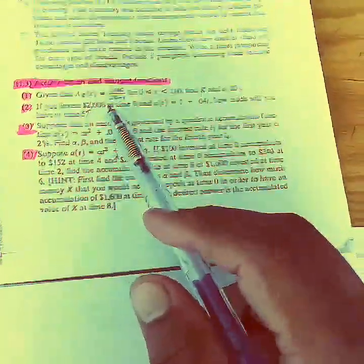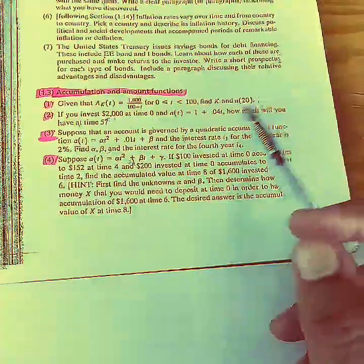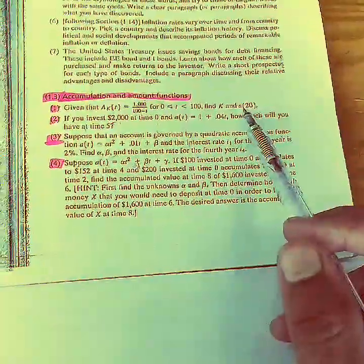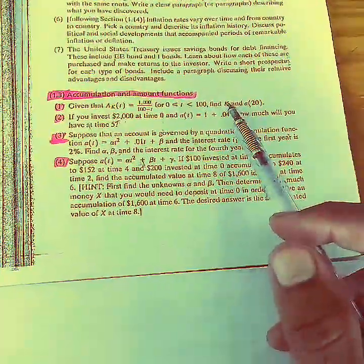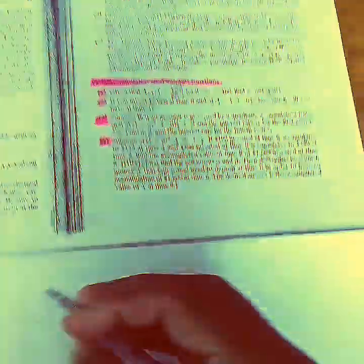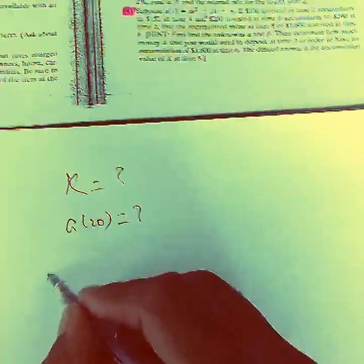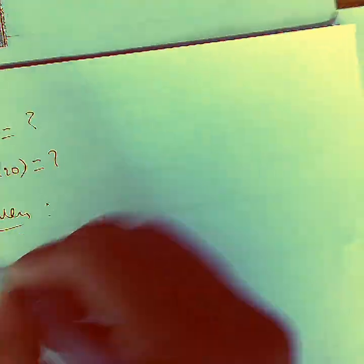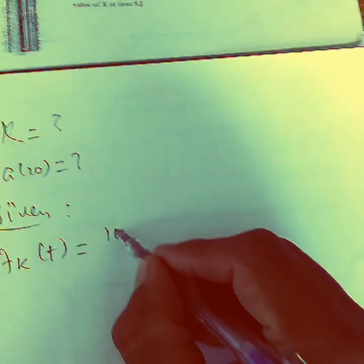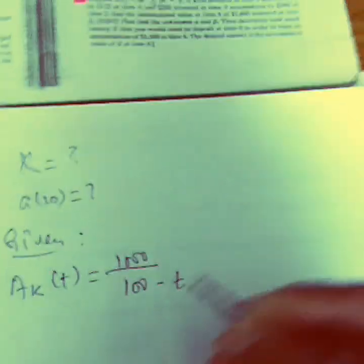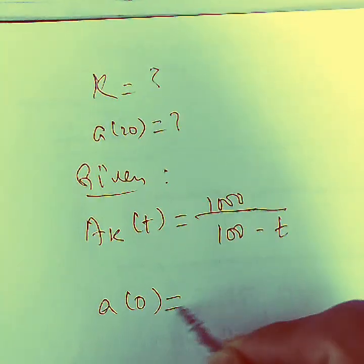For the first question, we are given that a(k,t) = 1000 / (100 - t), for t greater than or equal to 0 and less than 100. We need to find k and a(20), where a(20) is the amount function at time 20 and k is the investment, or principal amount.